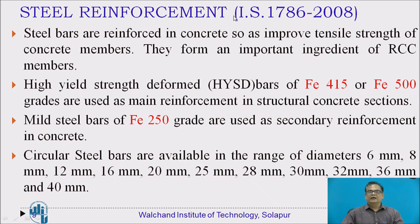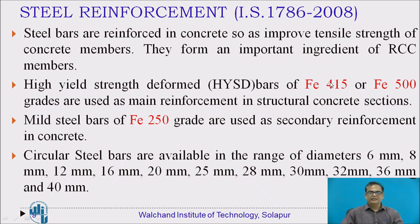Now, steel reinforcement. Steel bars are used in concrete to make it stronger in tensile strength. IS 1786 gives the specifications. High Yield Strength Deformed bars, called HYSD bars, are used. They come in two categories: FE-415, where 415 is the yield strength of steel in Newton per mm², and FE-500. Mild steel bars of FE-250 grade are also used, but as secondary reinforcement in concrete. Steel bars come in the range of 6 mm, 8 mm, up to 40 mm.